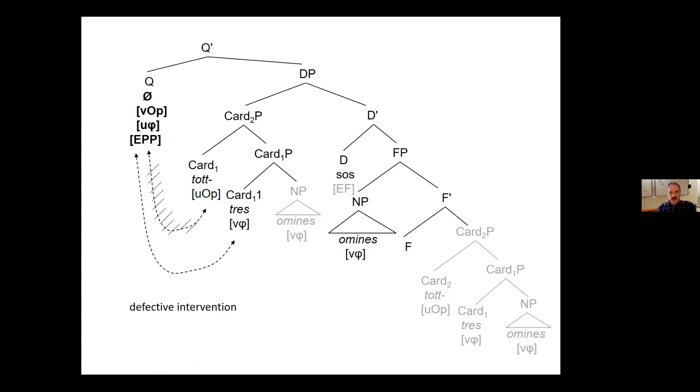Brief summary. We have seen the Old Sardinian quantifier TOTTO all, which was optional in Old Sardinian. However, we have seen when there is a numeral then TOTTO agrees obligatorily. So this is the structured issue, which we have identified as a universal numeric quantifier structure. And I mean, this finding contributes to our understanding of universal numeric quantifiers in general, in particular showing that the agreement behavior observed in Dutch is not an isolated phenomenon. And finally, I came up with a proposal of a minimalist analysis that explains both the positional and the agreement facts. Thank you very much.